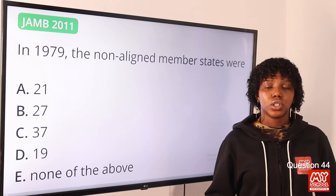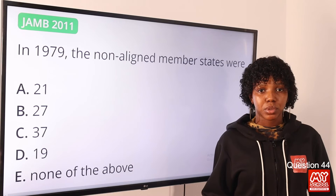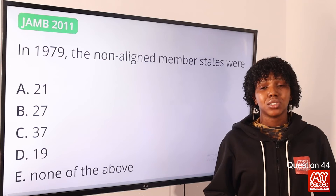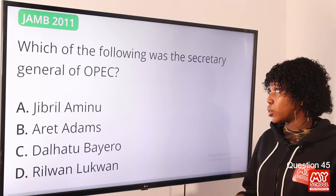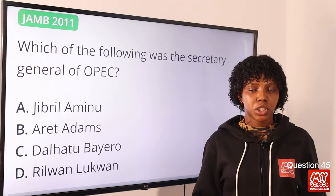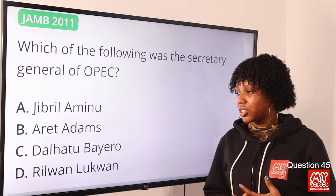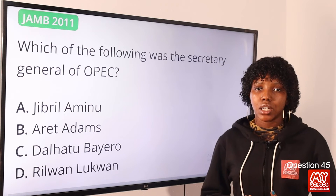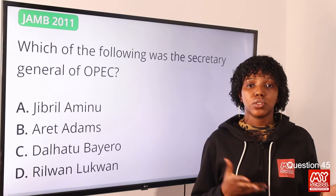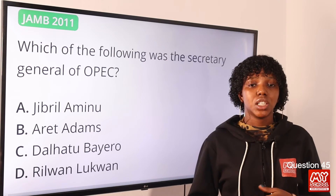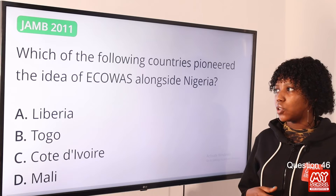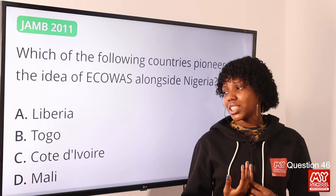Question 44: In 1979, the non-aligned member states were — the answer is none of the above. Non-alignment started with 25 members and grew to 120, which is the current number. The answer is none of the above. Question 45: Which of the following was the Secretary General of OPEC — Organization of the Petroleum Exporting Countries? The answer is option D, Wole Oyeleke. He was from Nigeria and served from the 1st of January 1995 to the 31st of December 2000.